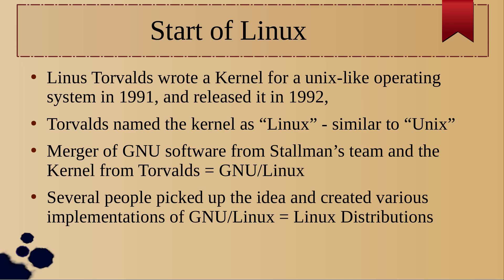So he got frustrated by it and wanted to write his own source code for a Linux kernel, and he wrote it in 1991. Although he finished it in 1991, he officially released it in 1992, and Torvalds named this kernel Linux, similar to Unix.